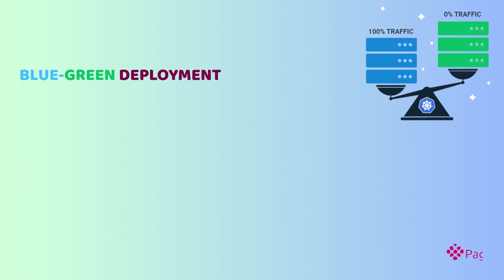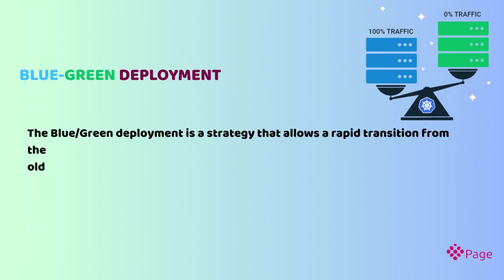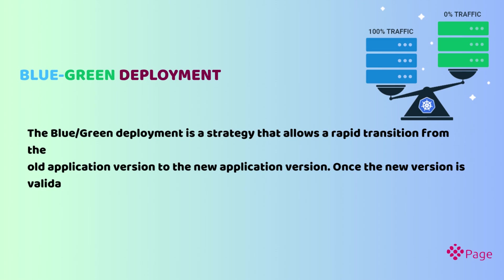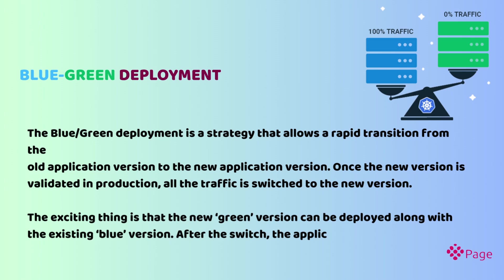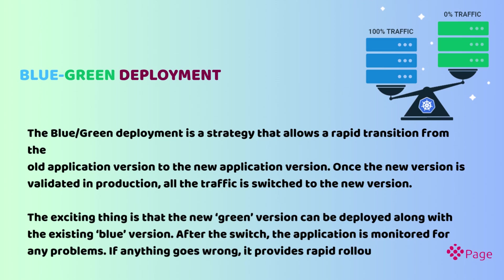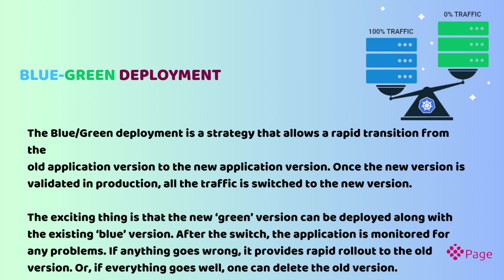Blue-green deployment: The blue-green deployment is a strategy that allows a rapid transition from the old application version to the new application version. Once the new version is validated in production, all the traffic is switched to the new version. The new green version can be deployed along with the existing blue version. After the switch, the application is monitored for any problems — if anything goes wrong it provides rapid rollback to the old version, or if everything goes well, one can delete the old version.